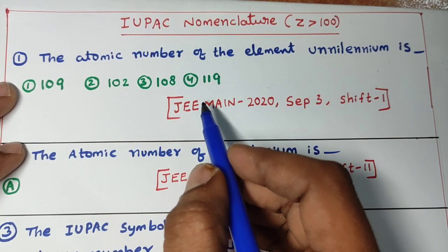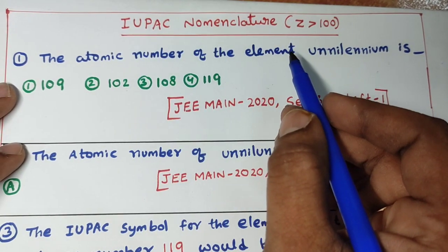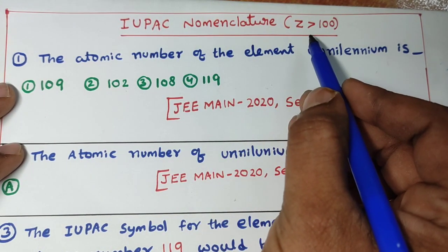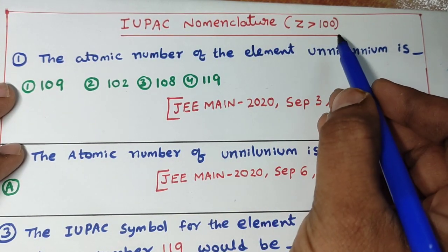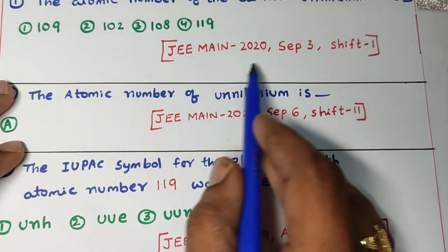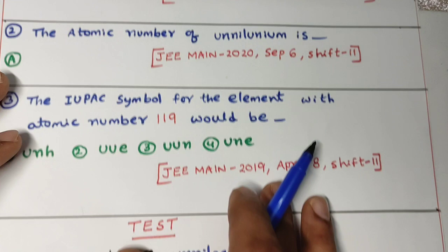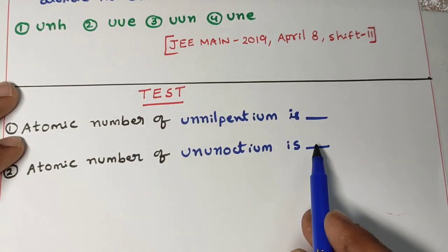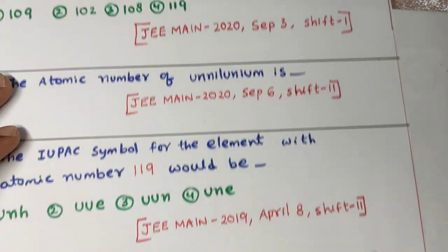Hello students, welcome to ASN Chemistry. Today I am going to discuss IUPAC nomenclature of elements having atomic number greater than 100. I will discuss JEE Main 2022 questions and JEE Main 2019 question and I will give a test on it. Let us start the class.